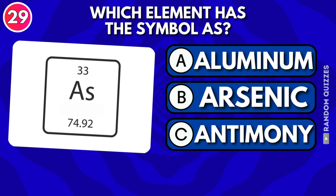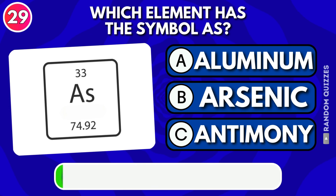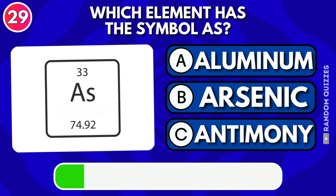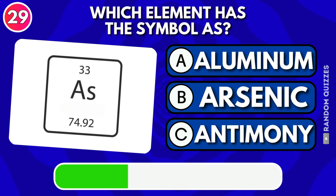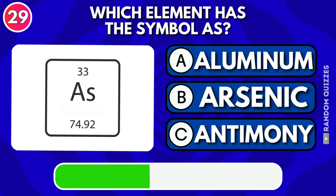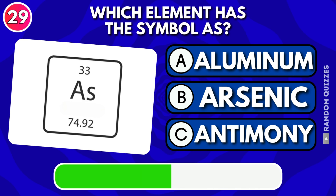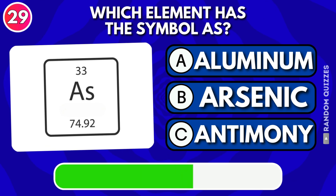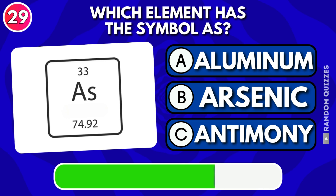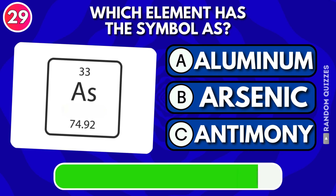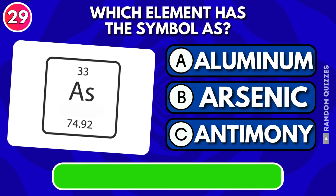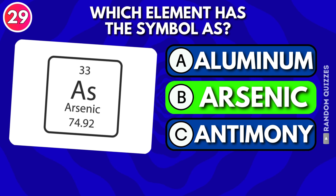Which element has the symbol As: aluminum, arsenic, or antimony? Answer: Arsenic.